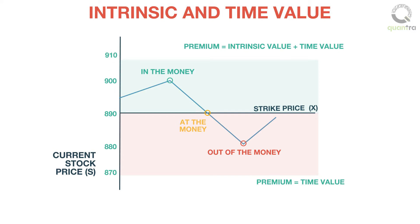For example, Mac buys a call option of Infosys (INFY), which is currently trading at 900 rupees, at a strike price of 890 rupees, and pays a premium of 12 rupees. Here, the intrinsic value is equal to 10 rupees, that is 900 rupees minus 890 rupees, and the remaining 2 rupees is the time value of the option.